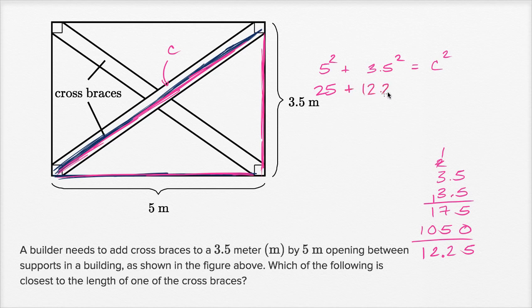So 25 plus 12.25, that's going to be 37.25 equals c squared, or we could say that c equals the square root of 37.25.